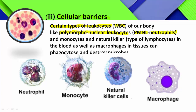PMNL neutrophils, monocytes, and natural killers — natural killers are types of lymphocytes — are all present in the blood. Macrophages, which are present in the tissue, also destroy microorganisms. All these microorganisms are thereby destroyed.